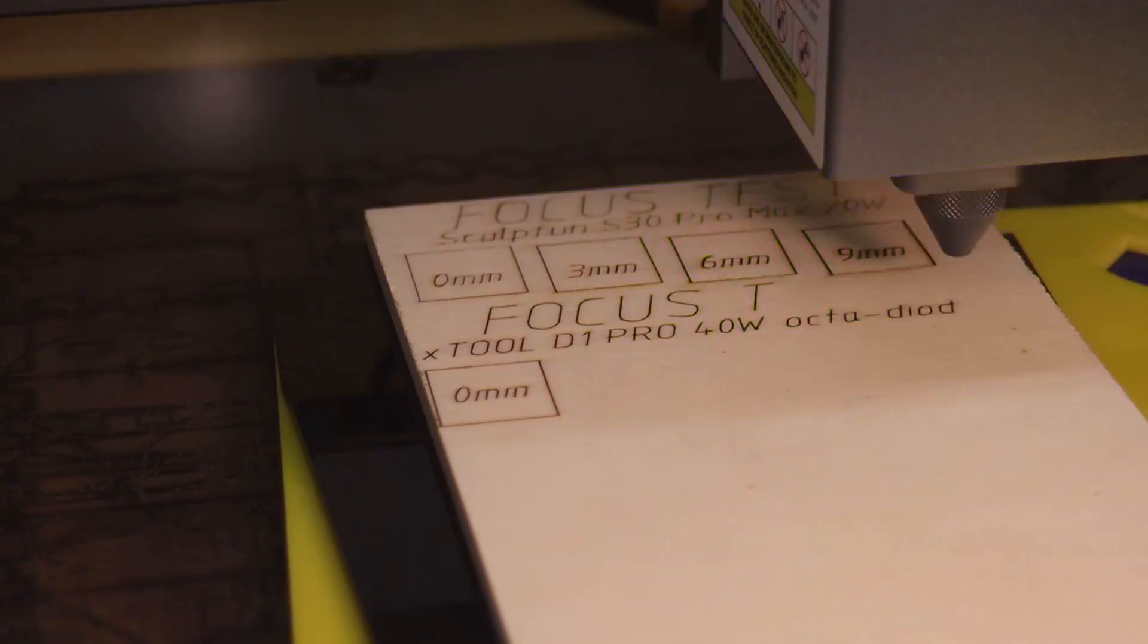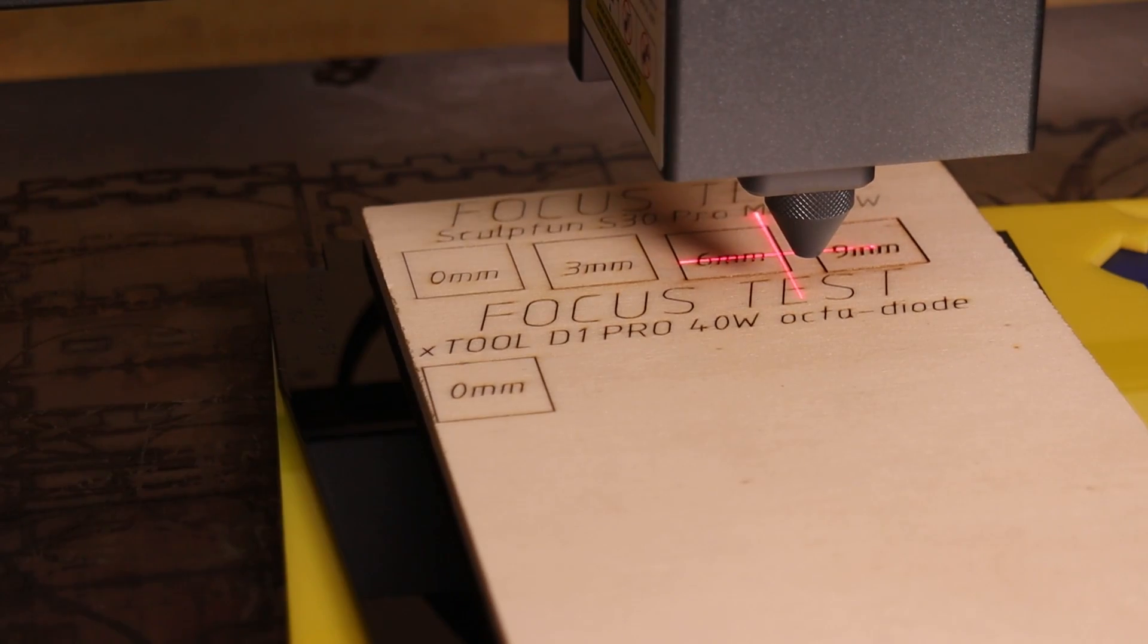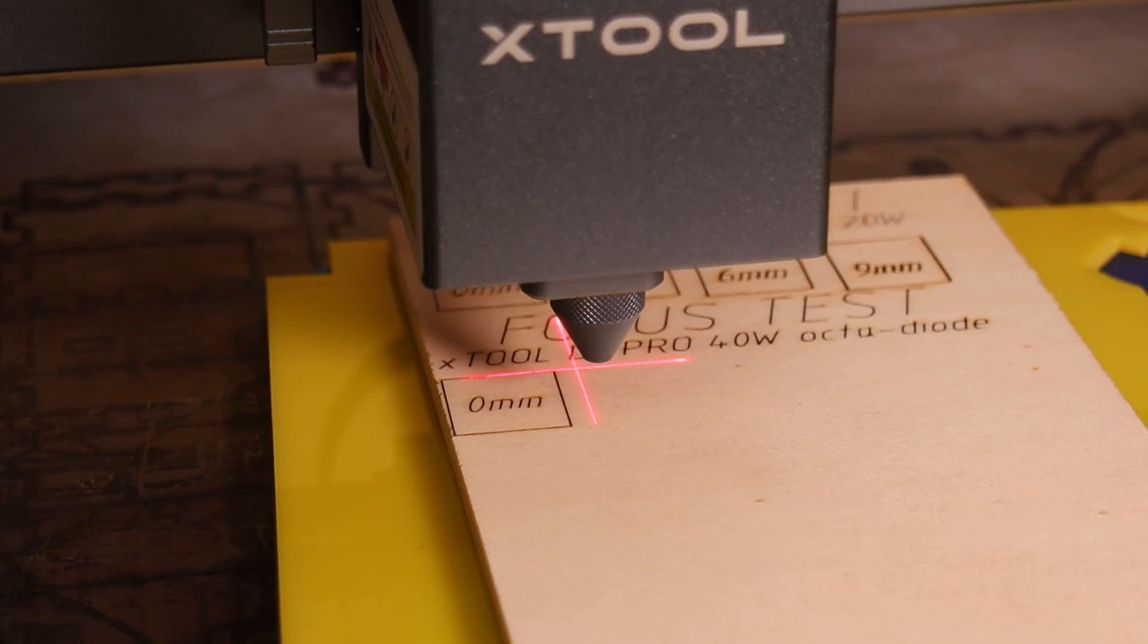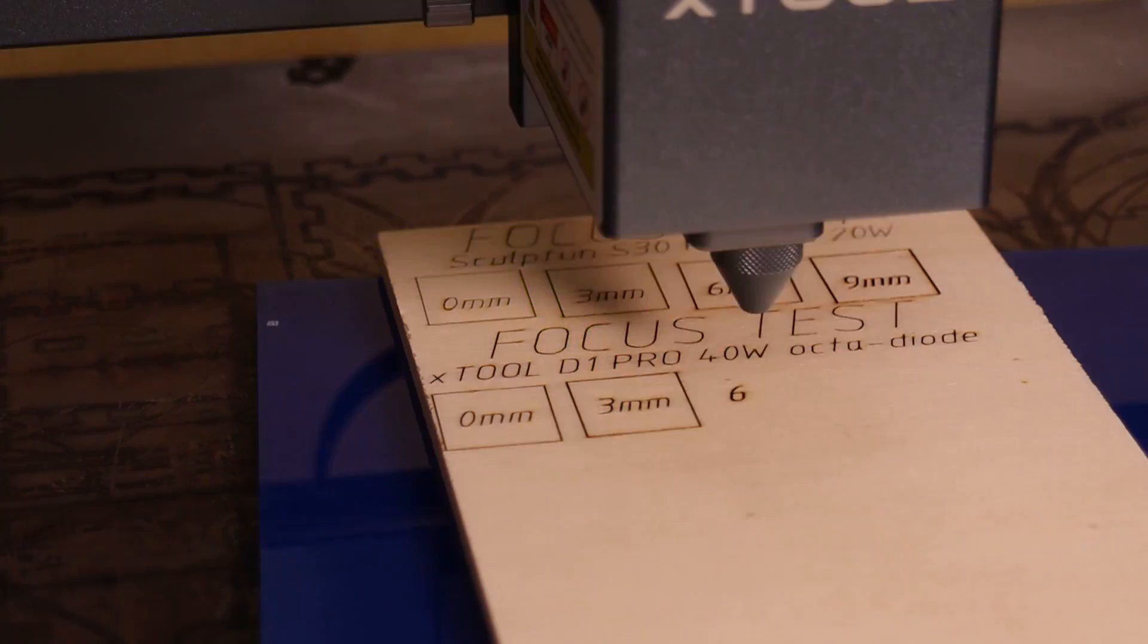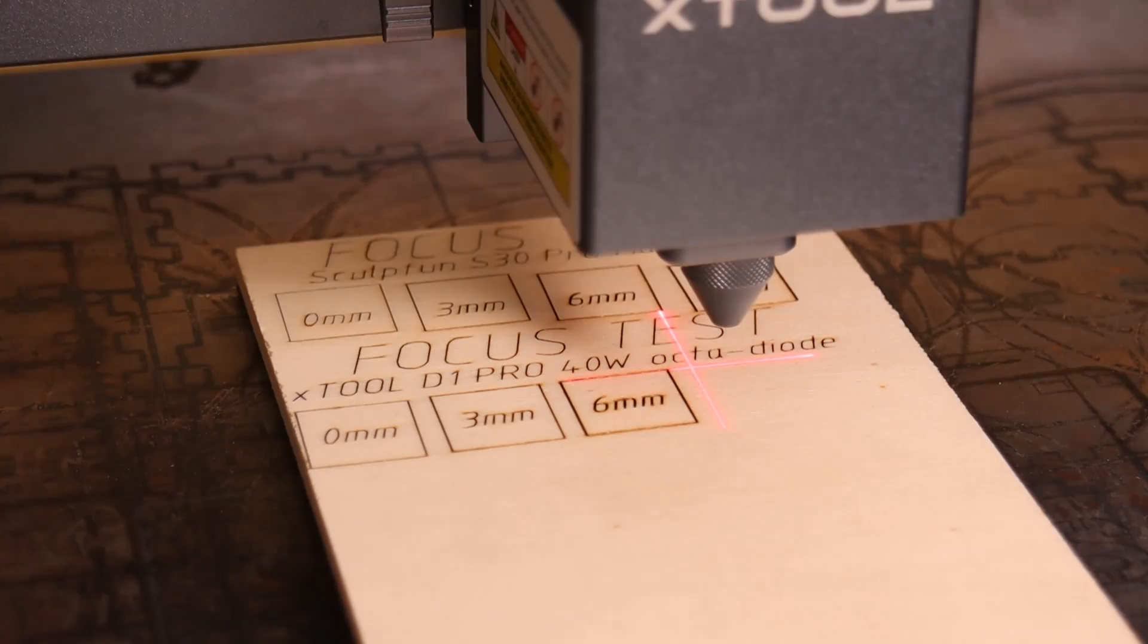Then, I keep removing the 3mm sheets one by one without readjusting the focus to see how the laser beam size increases further away from the optimal focus. Notice how easy it is to position the engravings using the red crosshair.